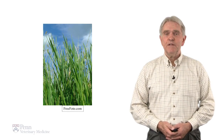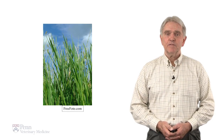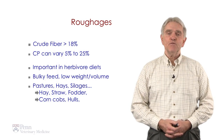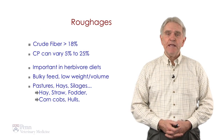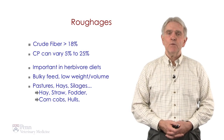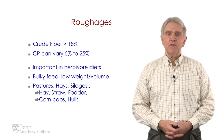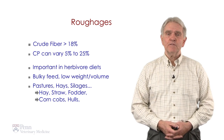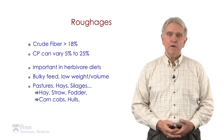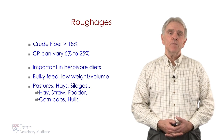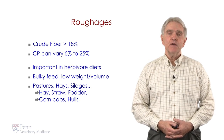So what are roughages in animal diets? Roughages are defined as crude fiber greater than 18%, but the crude protein can vary anywhere from 5 to 25%. These are important in herbivore diets. They're bulky, they have a low weight to volume, and they can be from pastures, hays, or silages.